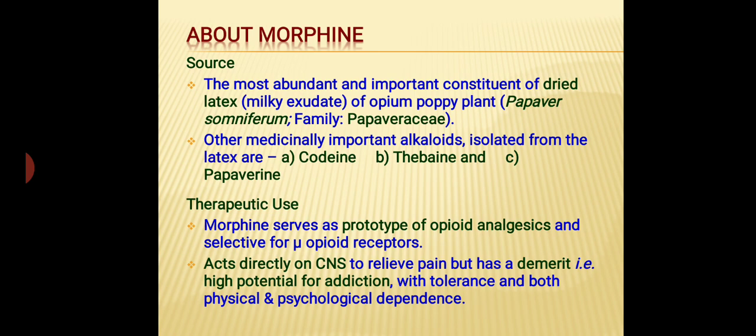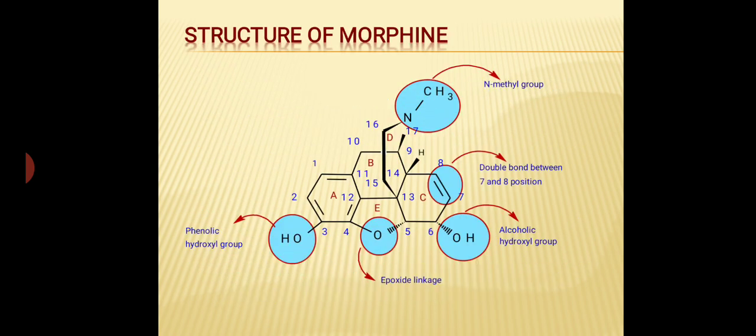Morphine serves as a prototype of opioid analgesics and it is selective for mu-opioid receptors. It acts directly on the central nervous system to relieve pain, but has a demerit: it has high potential for addiction with tolerance and both physical and psychological dependence.